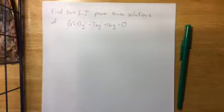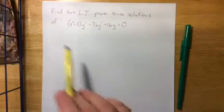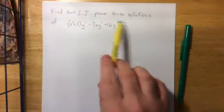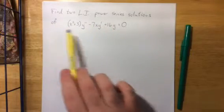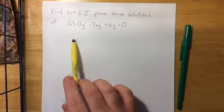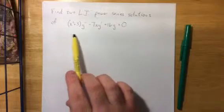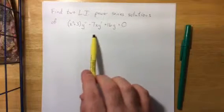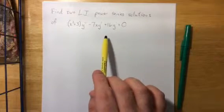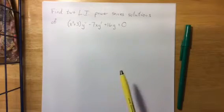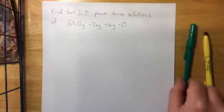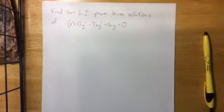The first problem we're going to take a look at here today is to find two linearly independent power series solutions of the following differential equation. The coefficient of y double prime is x squared plus 3, the coefficient of y prime is negative 7x, and the coefficient of y is 16.